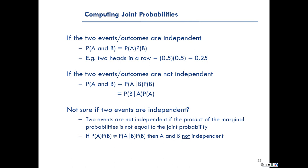However, if the two events are not independent, then the probability of A and B jointly is equal to the probability of A conditional on B multiplied by the marginal probability of B on its own. It's also equal to the probability of B conditional on A multiplied by the probability of A. I'll talk about how to compute those conditional probabilities in a few slides.